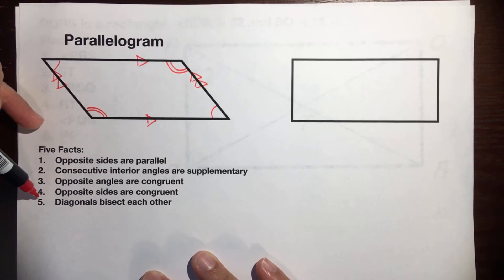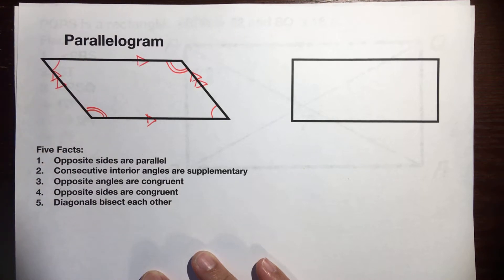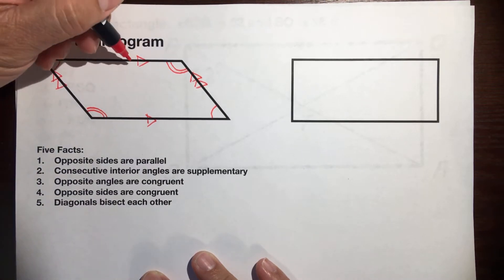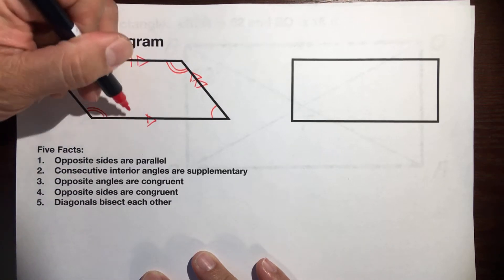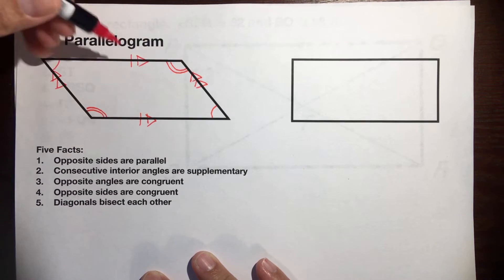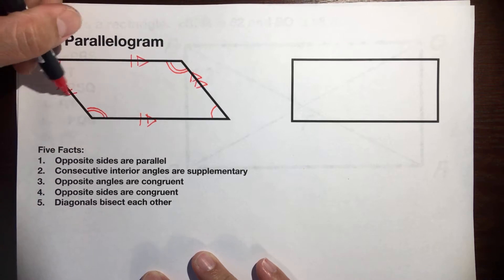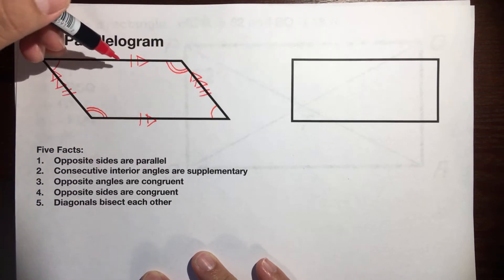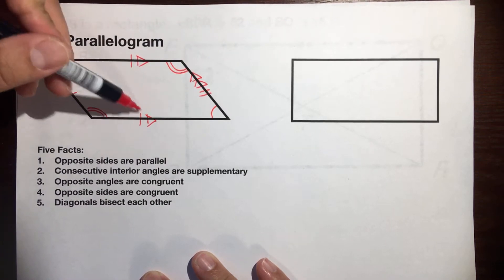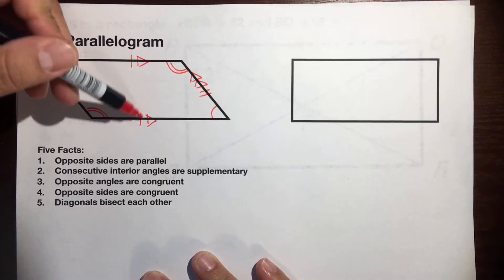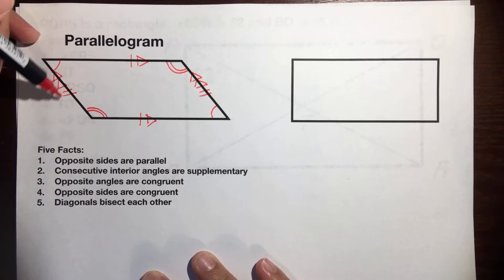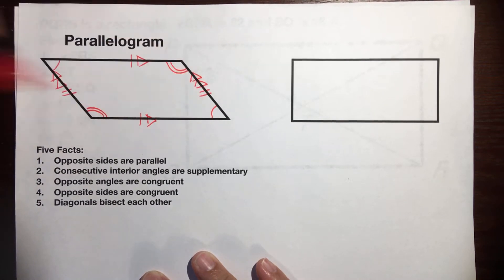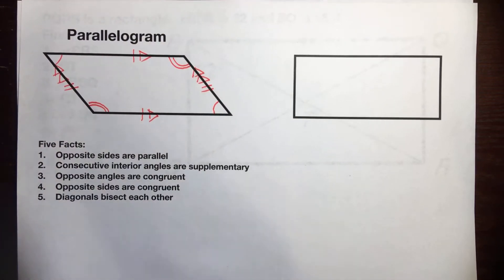Fact number four: opposite sides are congruent. We can put one tick mark here, one tick mark here, two tick marks here, and two tick marks here. So if this was 10, this one would have to be 10. If this one was 5, this one would have to be 5.